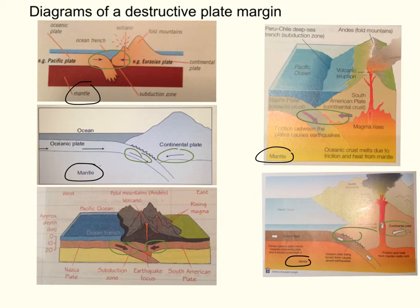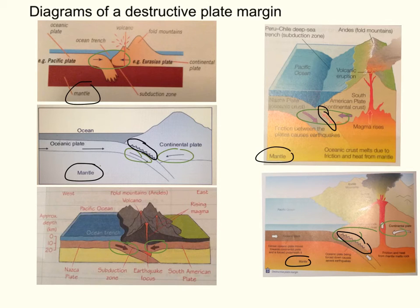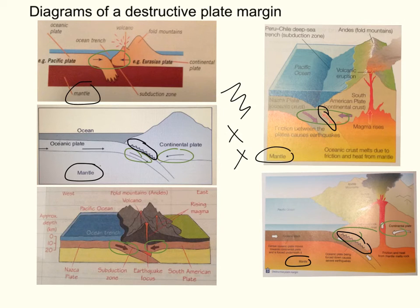Additionally, between the two plates as one is subducted underneath the other, we do get pressure and friction. On these three diagrams, you can see that this friction and pressure is identified by a squiggly line or by crosses. Please use either of these in your exam when drawing a diagram, and make sure you include on the key what the zigzag line or crosses actually mean.